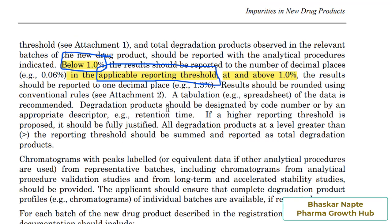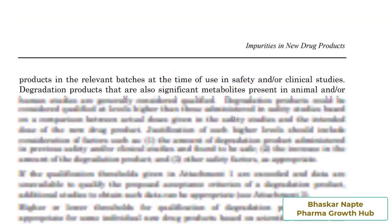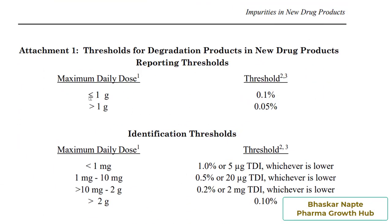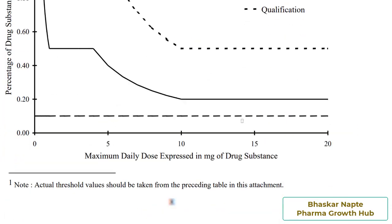Below one percent, impurities must be reported against the applicable reporting threshold. Let's understand what reporting threshold means. For drug products, if the maximum daily dose is equal to or less than one gram, the reporting threshold is 0.1% — only one digit after the decimal. But if the maximum daily dose is greater than one gram, the reporting threshold is 0.05%, which requires two digits after the decimal.